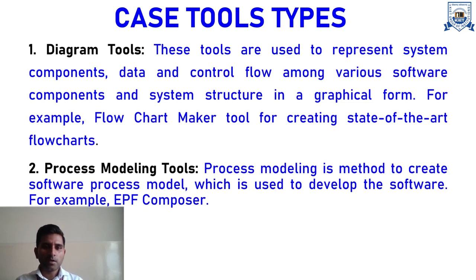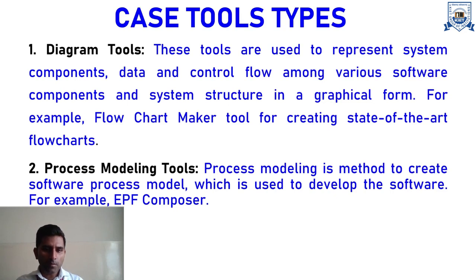The second type is process modeling tools. Process modeling is a method to create software process models which are used to develop software. We have discussed various types of software process models — waterfall model, spiral model, iterative model, RAD model. If you are going for automation of these software process models, you can use process modeling tools. One of the popular process modeling tools widely utilized in the IT industry is EPF Composer.